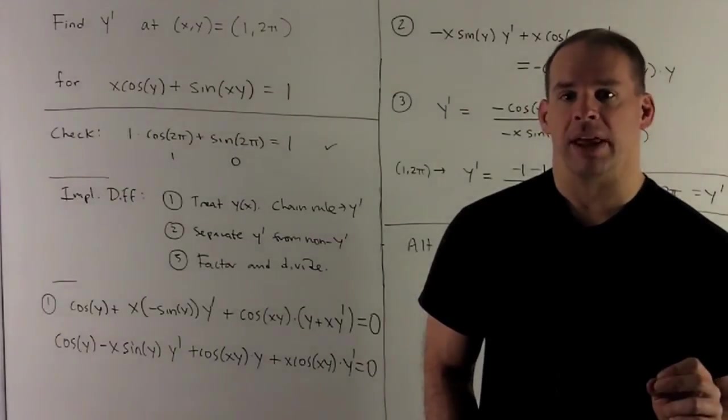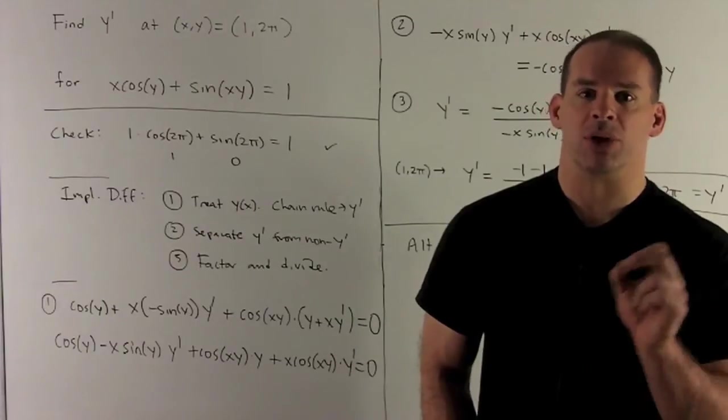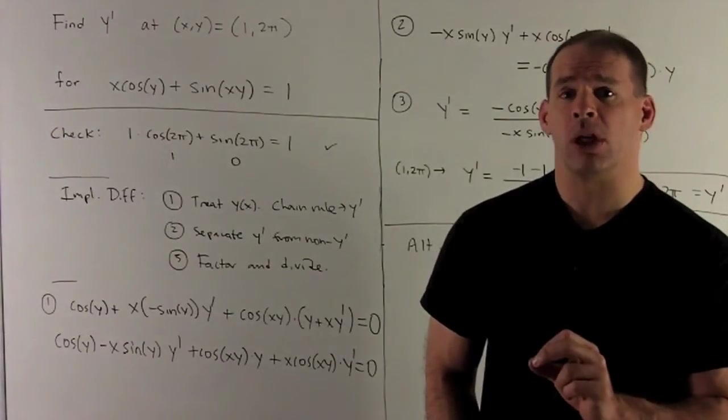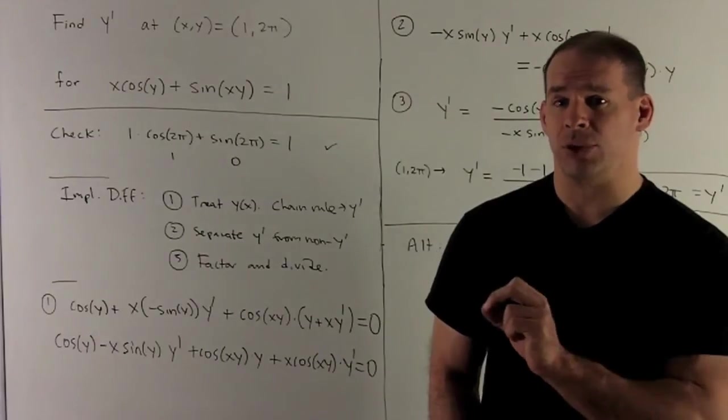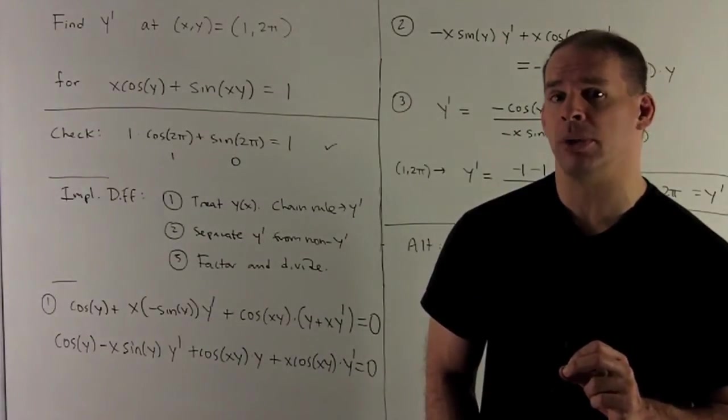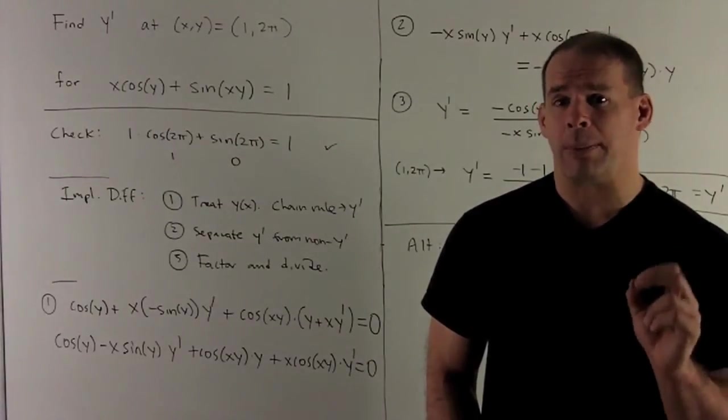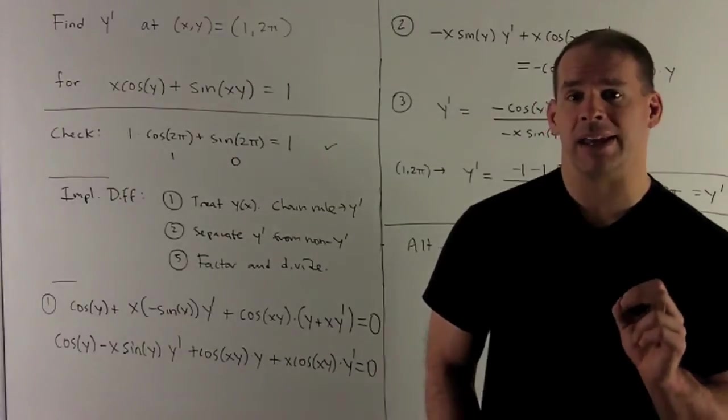So, what's going to happen then? Well, if I have two things that are equal, if I take a derivative of both sides with respect to x, whatever is left over is equal. Whenever I hit a y, when I do the derivatives on each side, remember to put your y prime in for the chain rule.